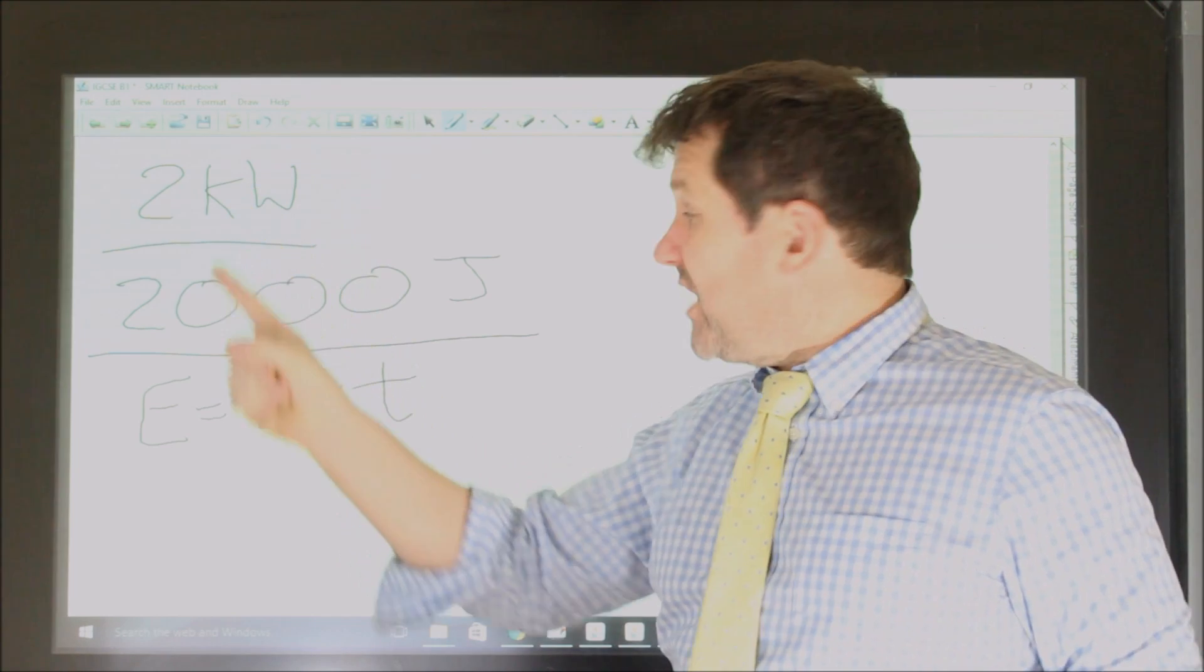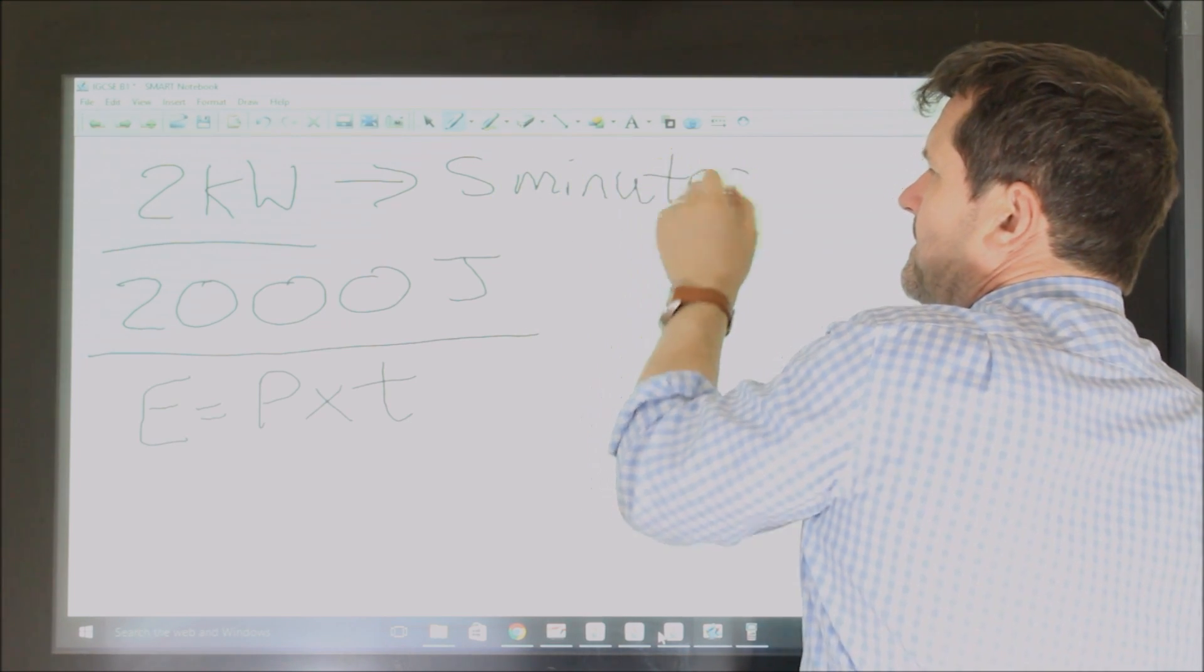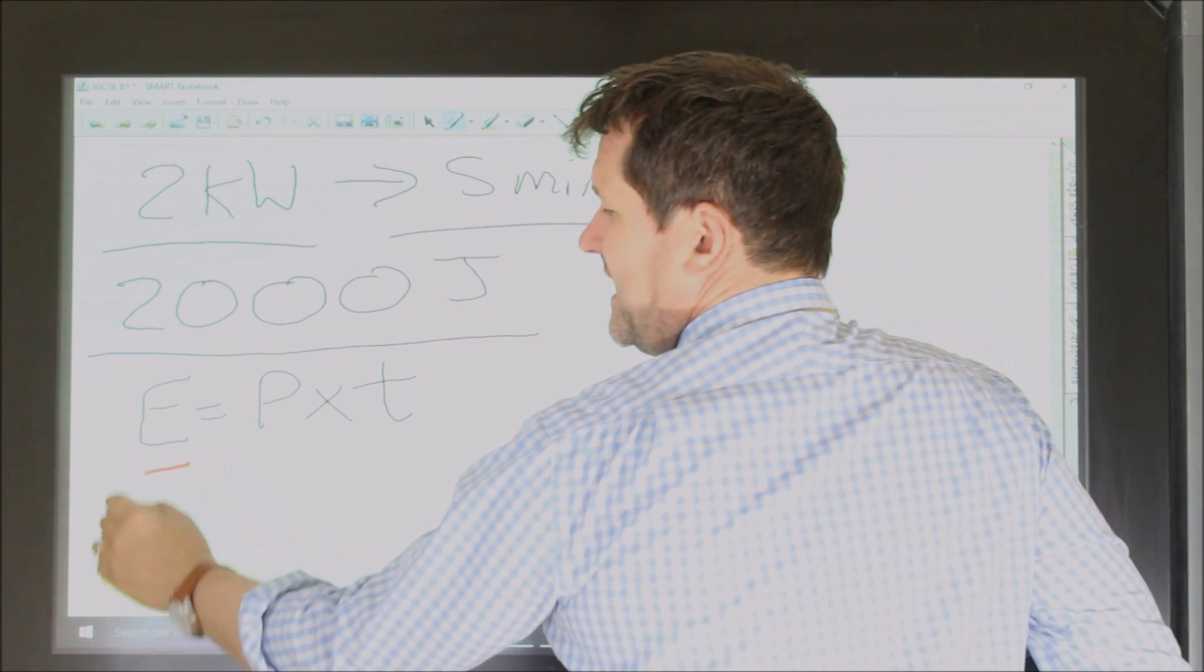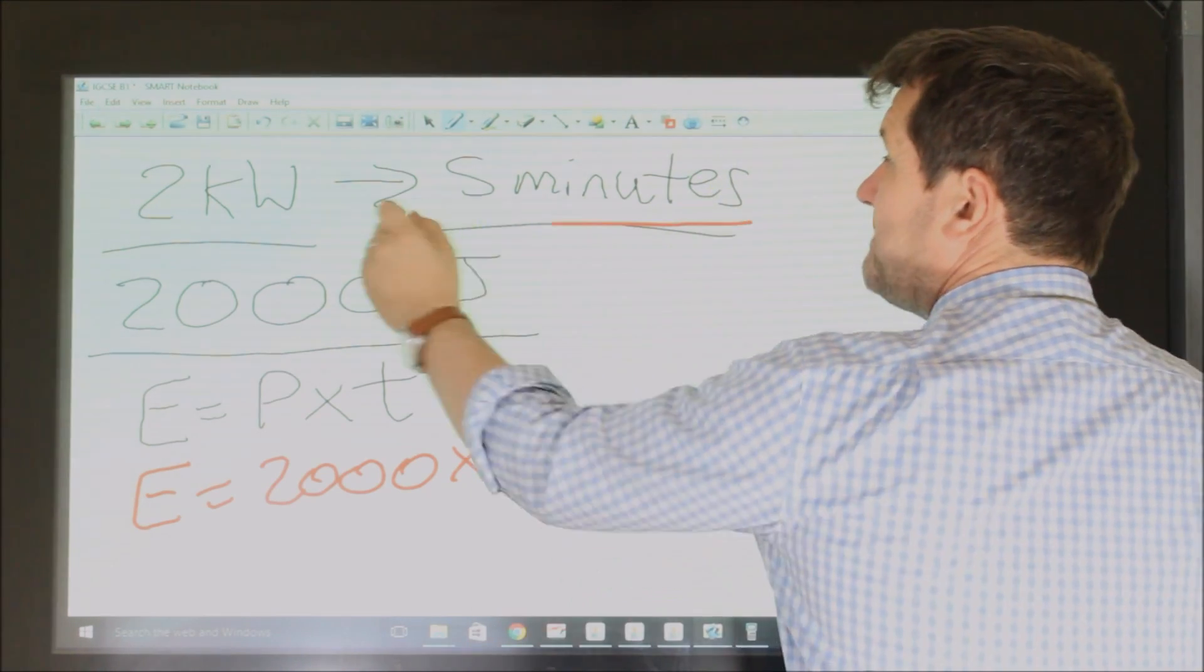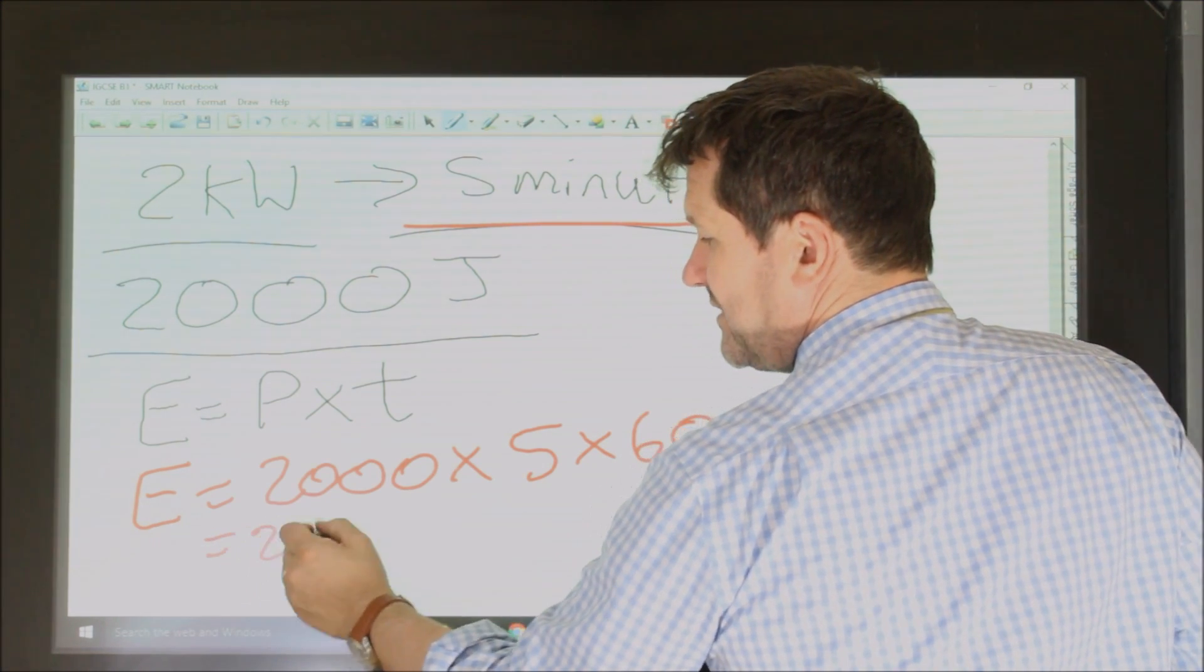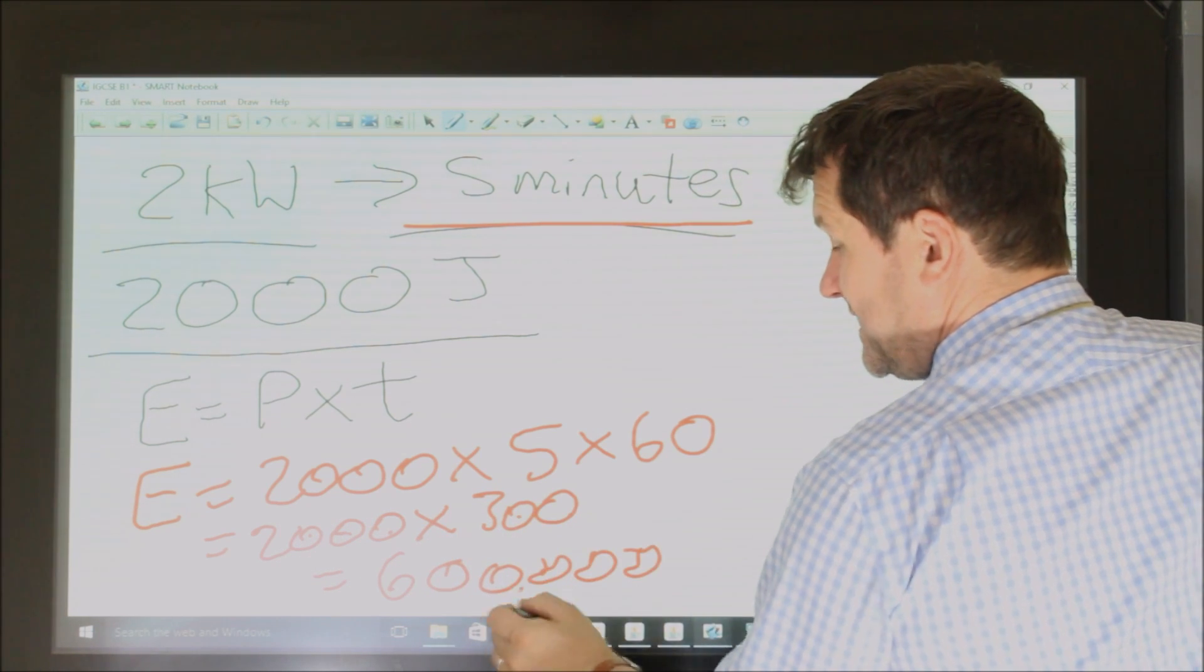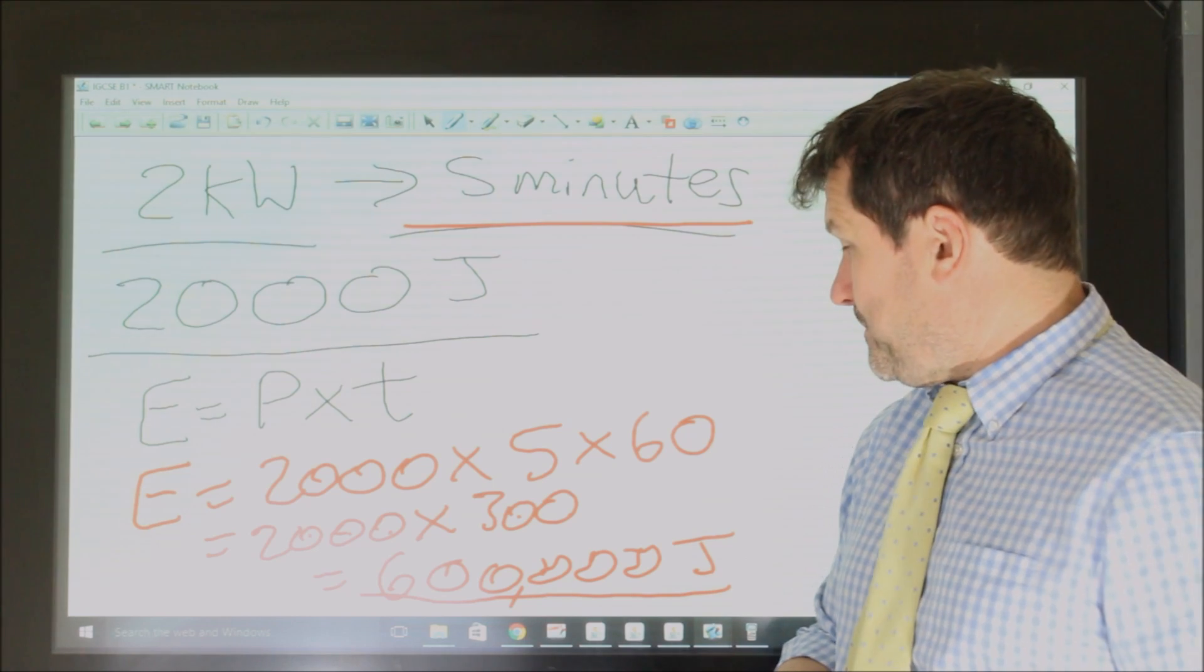So for example, if you use a two thousand watt hairdryer and say it takes you, say, five minutes to dry your hair. I'm sure it probably takes you a lot longer, but just say it takes five minutes to dry your hair. How much energy have you actually used? So you could say energy is power times time. However, time is always in seconds. This is in minutes. So it's five, get it into seconds, five times sixty, which equals two thousand times three hundred, which equals six with one, two, three, four, five. Six hundred thousand joules of energy to dry your hair with a two kilowatt hairdryer for five minutes. Okay.